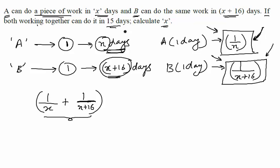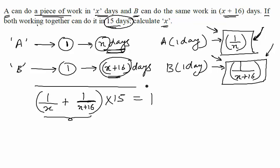It is already given to us that if they work for 15 days, they can complete the work. So this is the amount they are doing in one day, and if they keep doing this for 15 days they can complete one full work. So solving this equation should give you the answer.